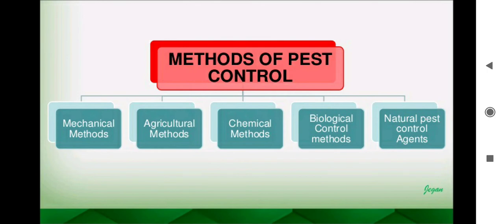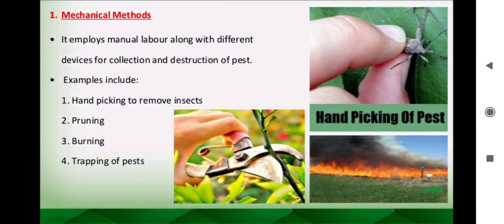To control pests is a big challenge. There are five types of pest control methods: the mechanical method, where we manually perform operations; the agricultural method, where we change the crop field preparation; the chemical method, where we apply chemicals; the biological method, where we encourage other organisms to control harmful organisms; and natural pest control agents like natural pesticides.